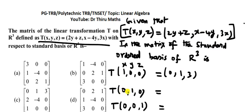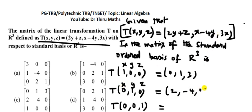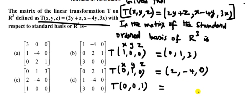Next, compute T(0, 1, 0): substitute x=0, y=1, z=0. Apply: 2y + z gives 2 into 1 plus 0 = 2. For x − 4y: 0 minus 4 into 1 = −4. For 3x: 3 into 0 = 0. So T(0, 1, 0) = (2, −4, 0).